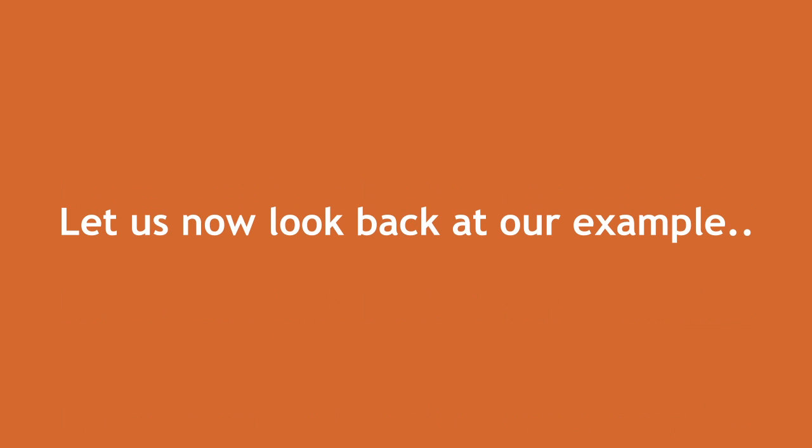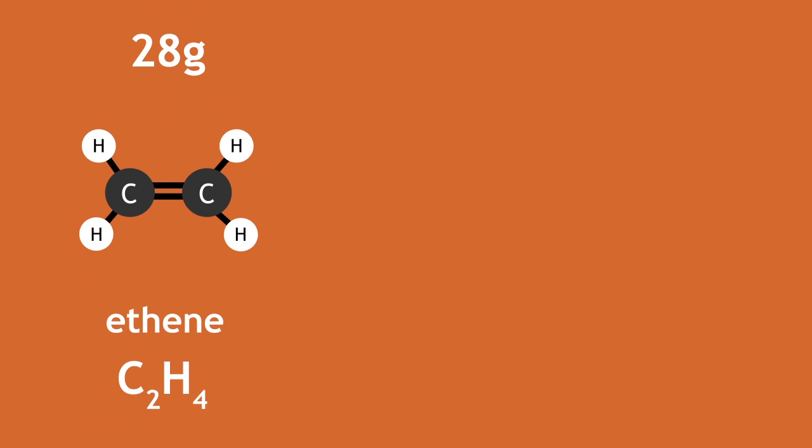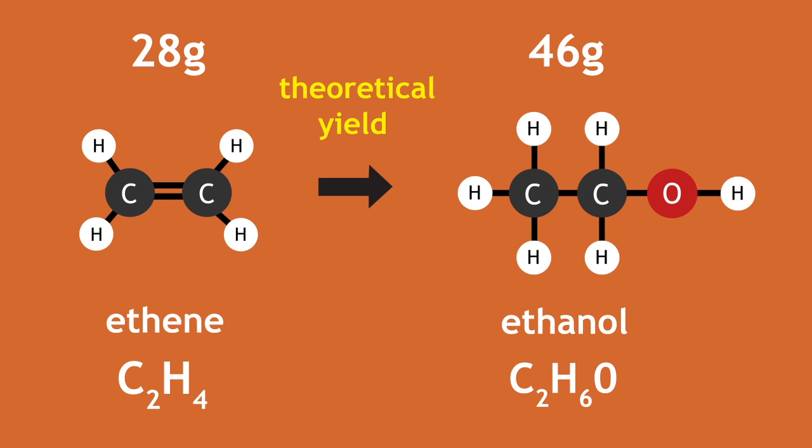Let us now look back at our example, in which we had calculated that 28 grams of ethene produced a theoretical yield of 46 grams of ethanol. Let us say this was carried out in practice, and only 42 grams of ethanol was actually produced.